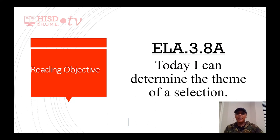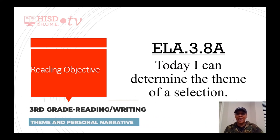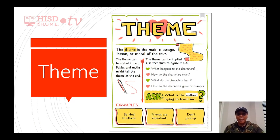Our reading objective comes from ELA 3.88. Today I can determine the theme of a selection. The theme is the main message, lesson, or moral of the text. The theme can be stated in the text, or it can be implied.